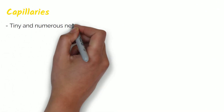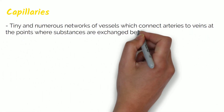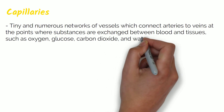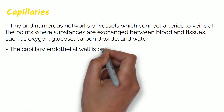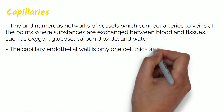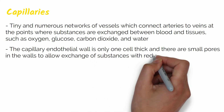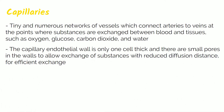Capillaries are tiny and numerous networks of vessels which connect arteries to veins at points where substances are exchanged between blood and tissue, such as oxygen, glucose, carbon dioxide and water. The capillary endothelial wall is only one cell thick and there are small pores in the walls to allow the exchange of substances with a reduced diffusion distance for efficient exchange.